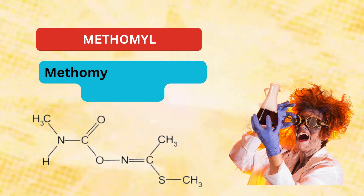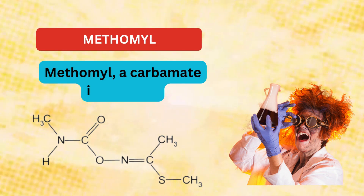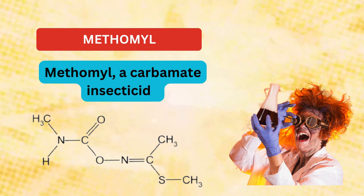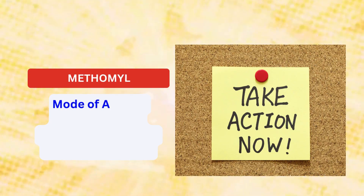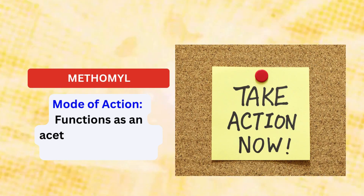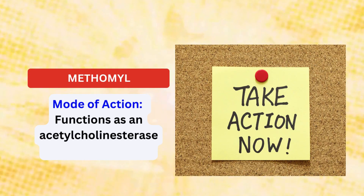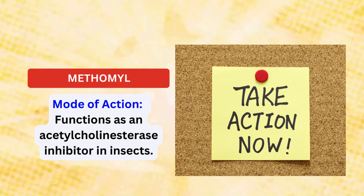Chemistry. Methomyl is a broad-spectrum carbamate insecticide. Mode of action: acting as an acetylcholinesterase inhibitor in insects, methomyl disrupts their nervous system.